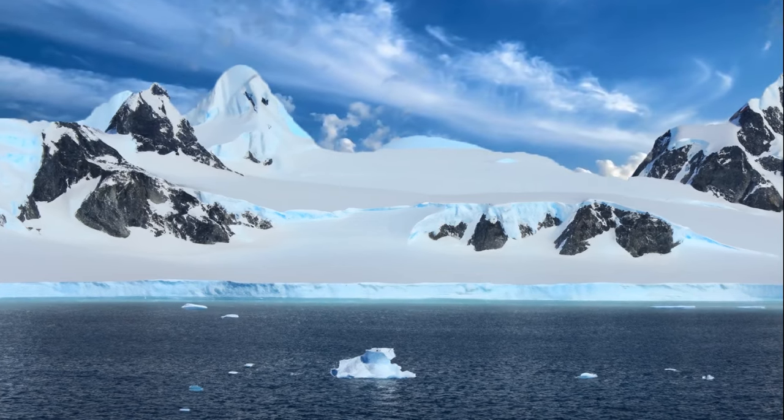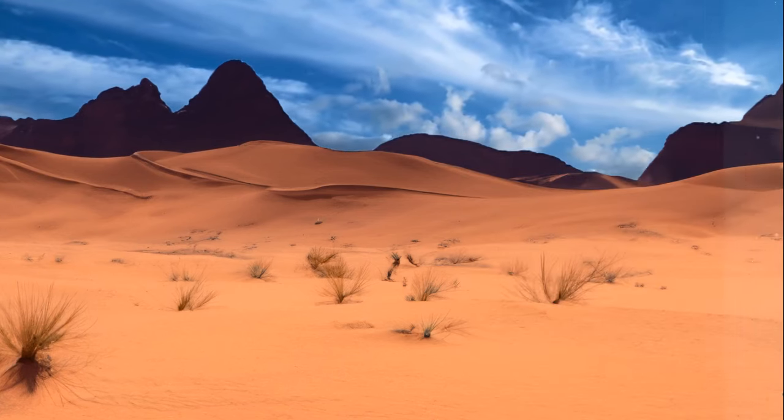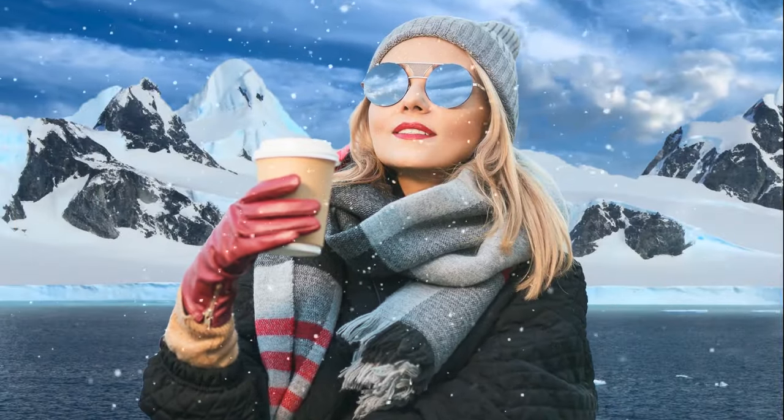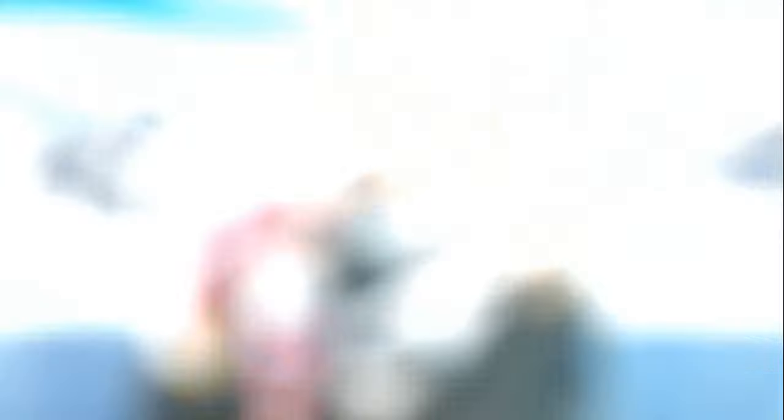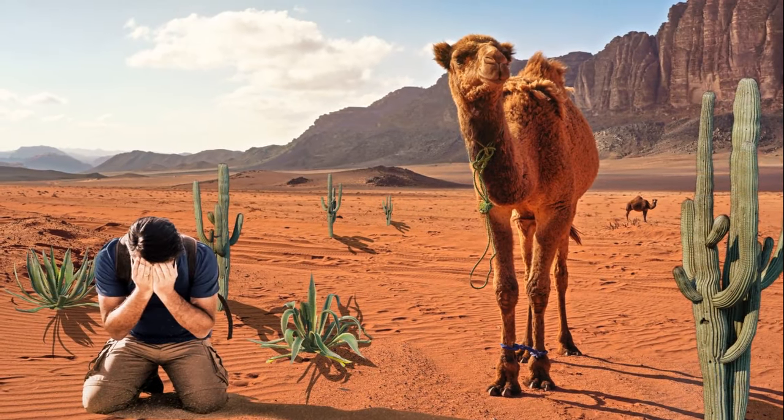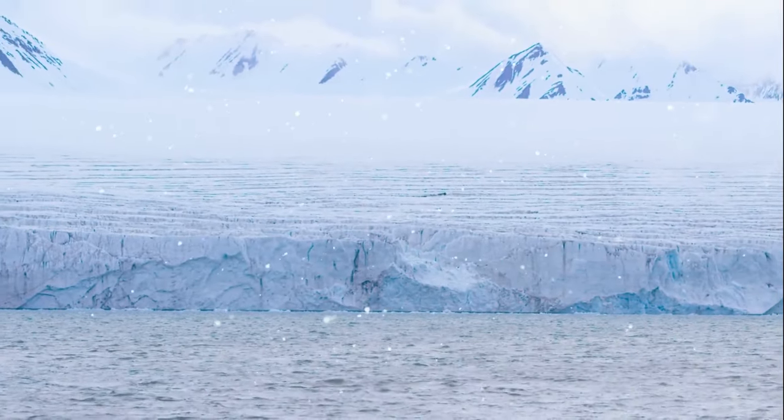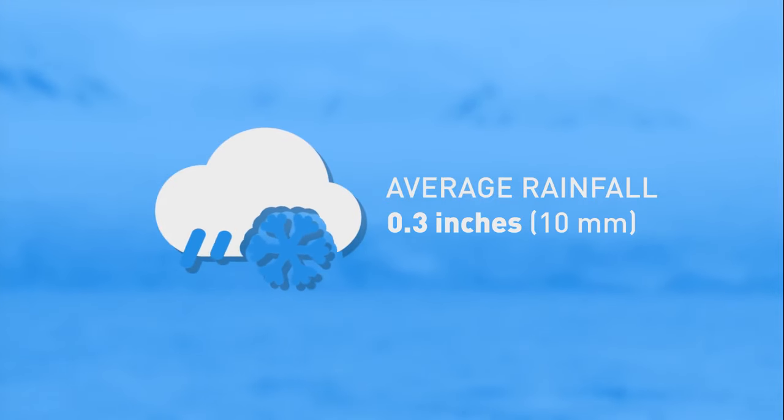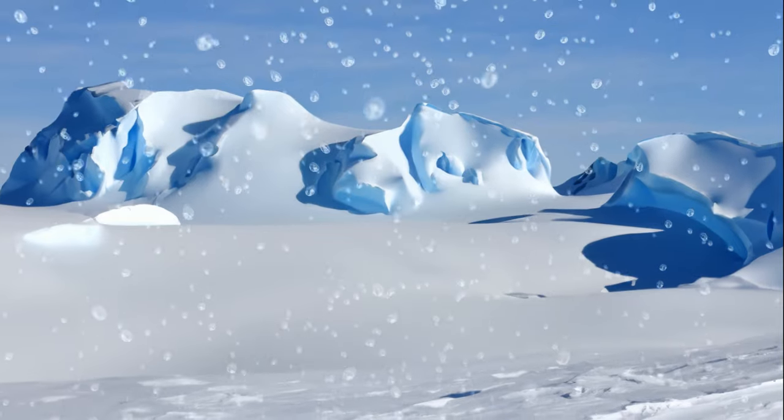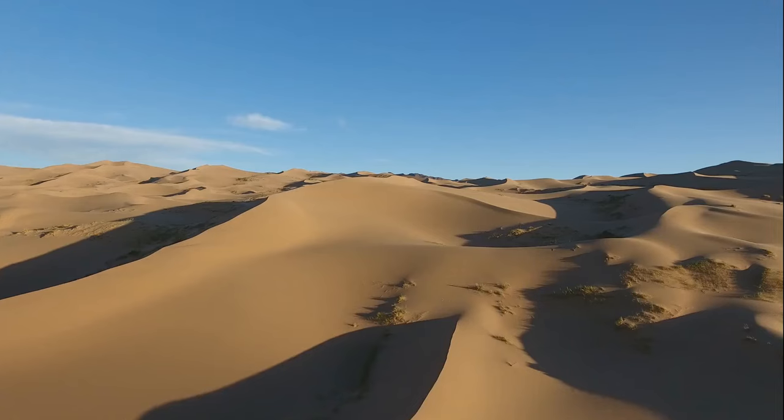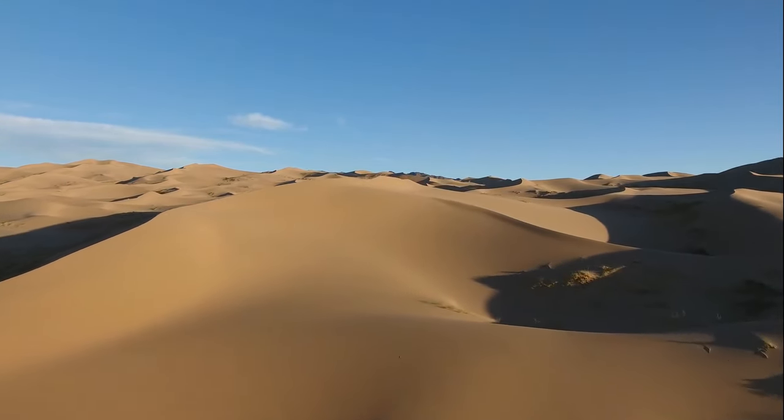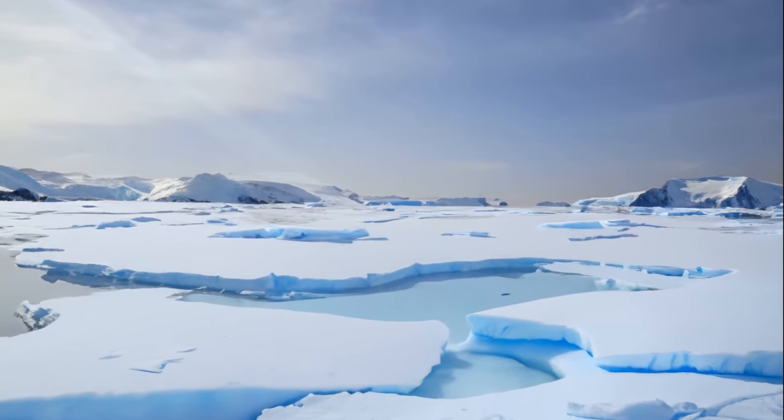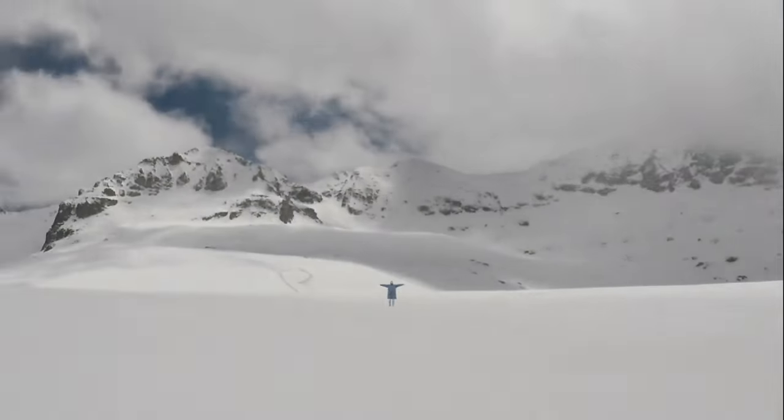You might not believe it, but Antarctica is actually a desert. With all that ice, you'd think it'd be like a winter wonderland. When we think of deserts, we picture camels and cacti and people struggling to find water. But in Antarctica, it's a whole different story. The struggle isn't to find water, it's to find anything that's not covered in ice. And the average rainfall has been just over 0.4 inches in the past 30 years. So technically, it's not the dunes or sizzling heat that makes a desert, it's the lack of precipitation.